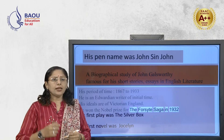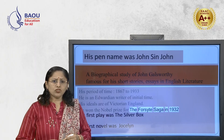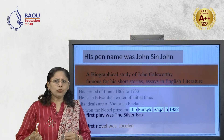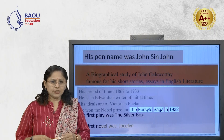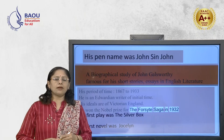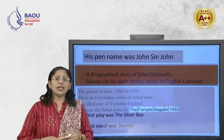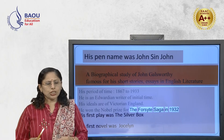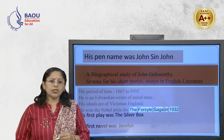Galsworthy is very much famous for his essays, and there is a very famous short story — if you have come across it — it was about Quality, regarding the shoes of a cobbler and how he had been creating the shoes. That was a very popular short story found even in school and college textbooks. His period of time is from 1867 to 1933. He can be considered a man of the Victorian era, though he is an Edwardian writer of the initial time, with ideals of Victorian England.